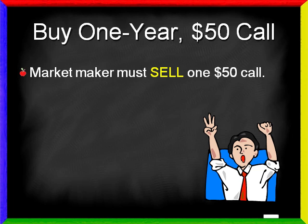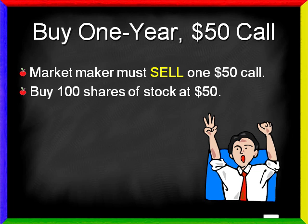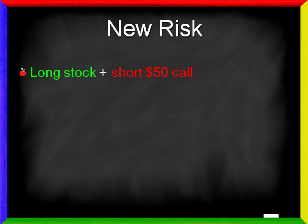First of all, in order to fill that order, the market maker must sell you one contract since he has to take the opposite side of the trade. By selling you the call, the market maker now has unlimited upside risk. That's because your potential unlimited gains are his risk. To combat that risk, he may decide to buy 100 shares of the underlying stock, which we'll assume is also trading for $50. But now there is a new risk — the market maker is long 100 shares of stock plus the short $50 call he sold you.